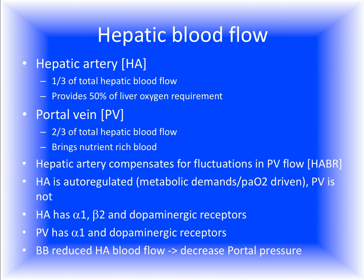While the hepatic artery is more or less auto-regulated, the portal vein blood flow is much more regulated by the nutrient content in the GI system. The hepatic artery has significant regulation via alpha-1, beta-2, and dopamine receptors, while the portal vein has much less regulation but is still somewhat affected by alpha-1 and dopamine receptors. If beta blockers are given, the hepatic artery blood flow decreases, and therefore portal venous pressure decreases — that is why beta blockers are used as mainstream treatment for portal hypertension.